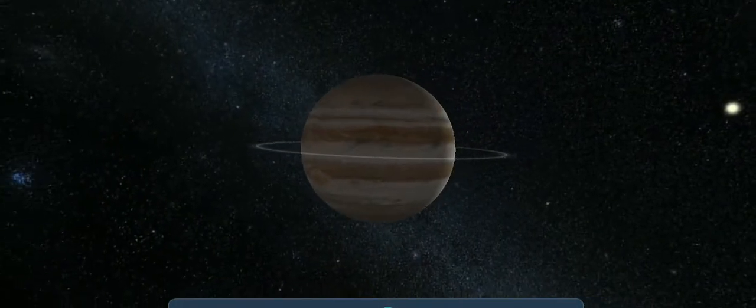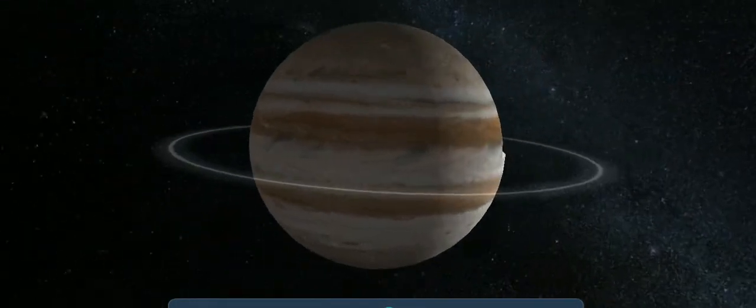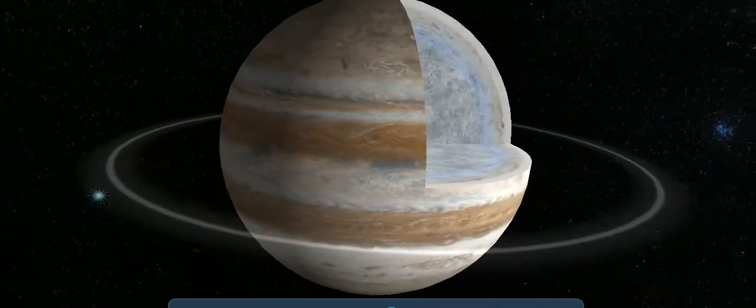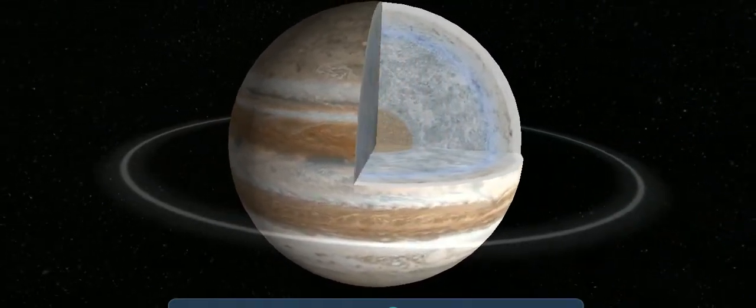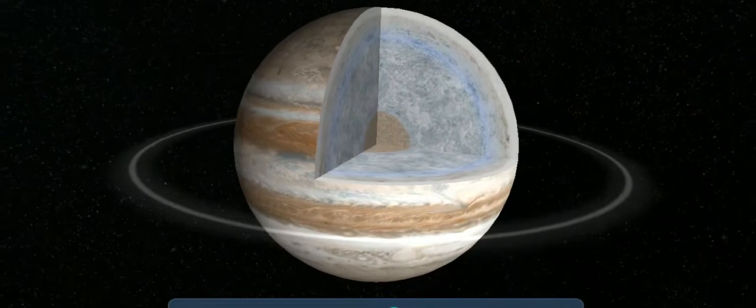Jupiter is a gas giant, so it does not have a solid surface. Its average density is low, 1.33 grams per cubic centimeter.